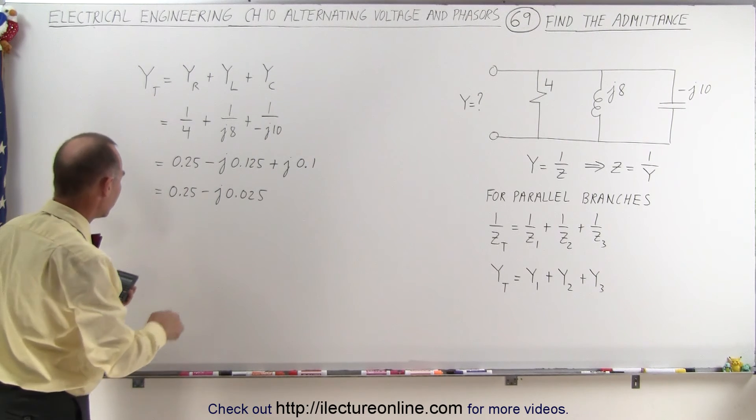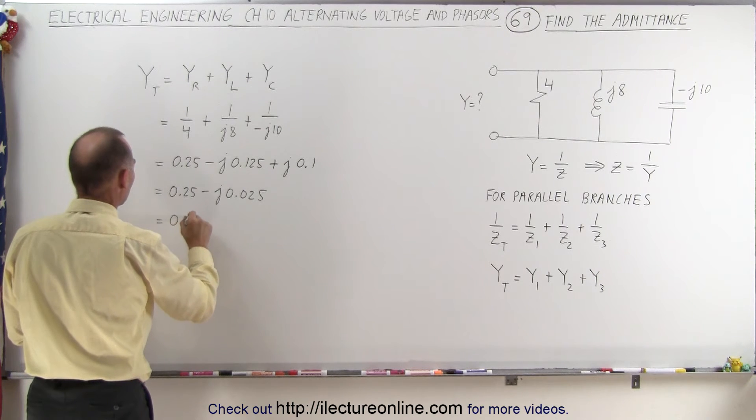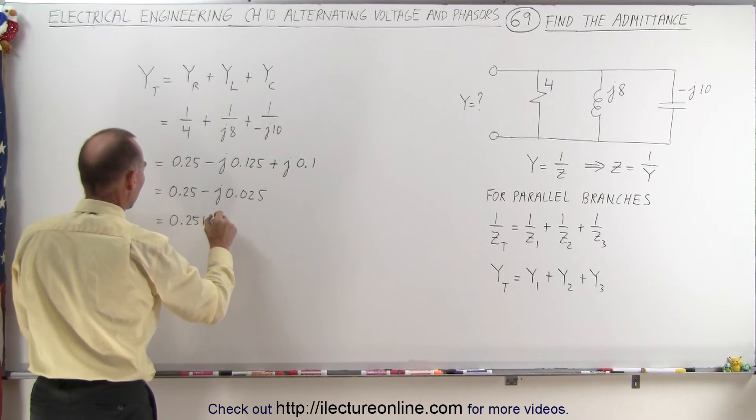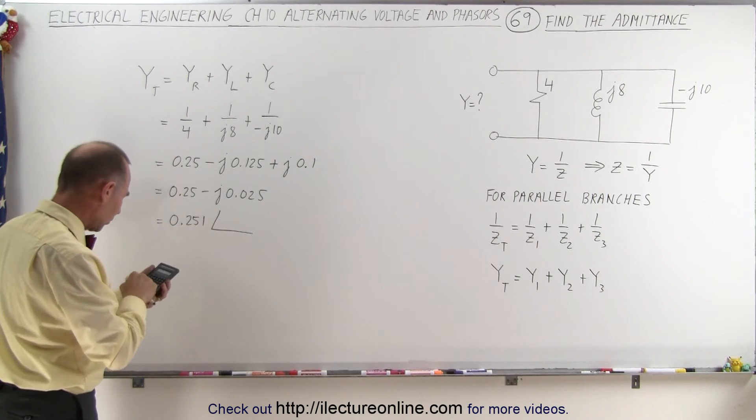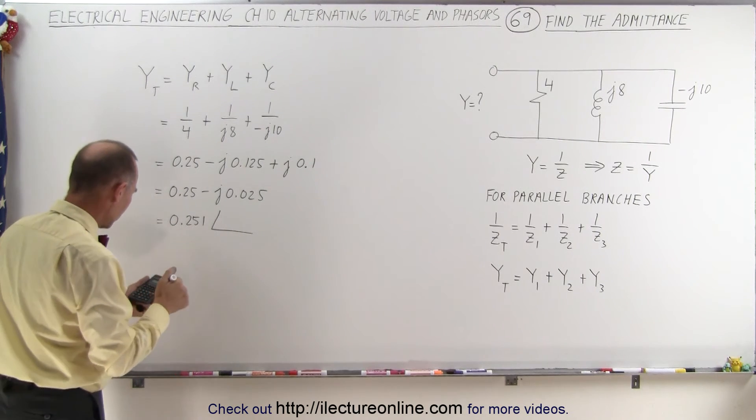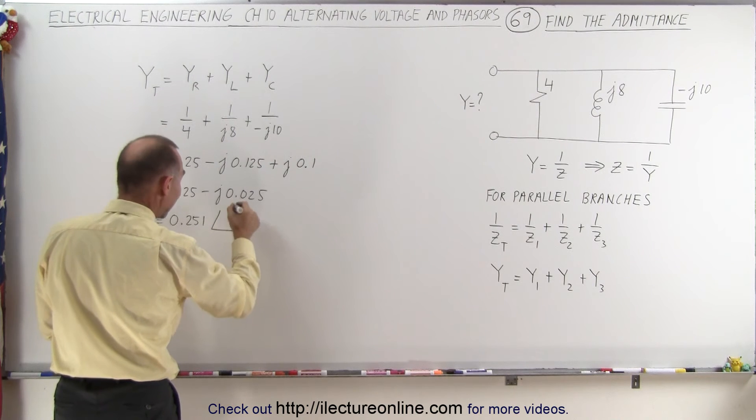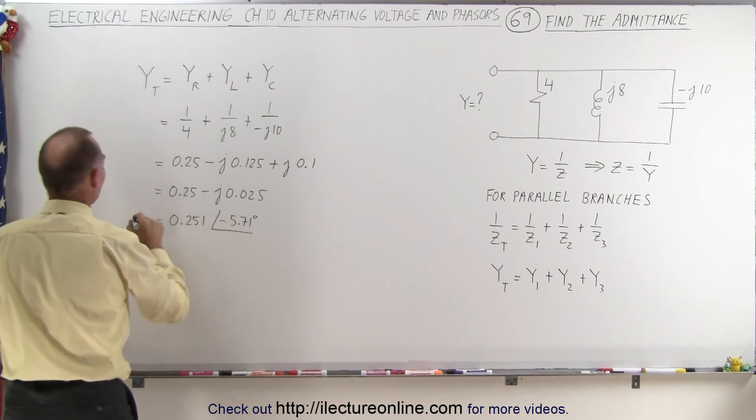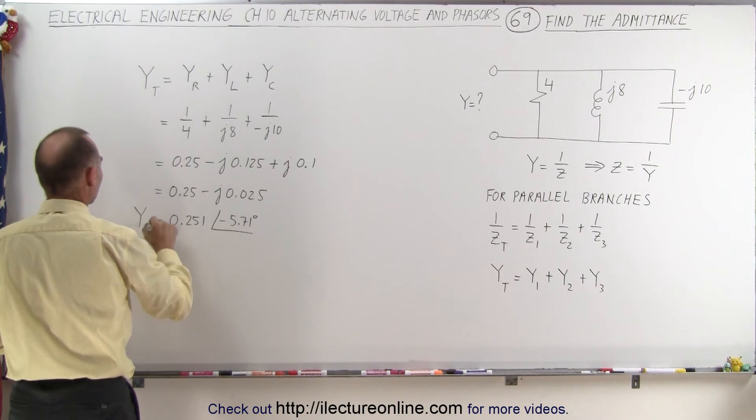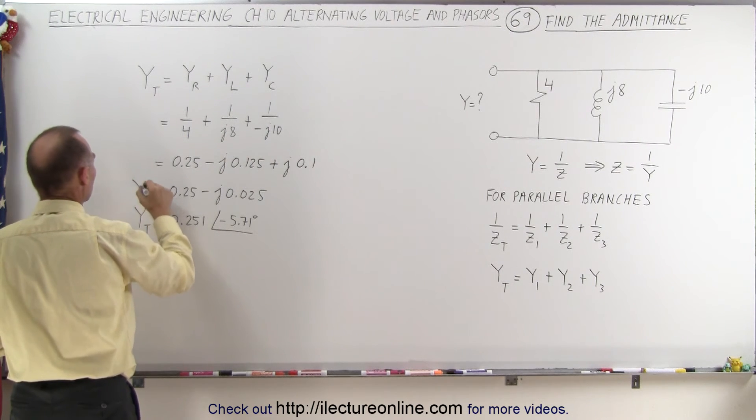that's equal to, this is equal to 0.251 with a phase angle of, that would be 1 tenths, or 0.1, take the inverse tangent of that, would be 5.71 degrees, and negative, negative 5.71 degrees. So that's equal to the admittance total, whichever format you want to put that in.